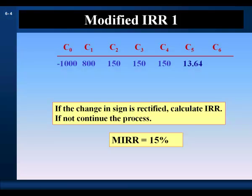The modified IRR of 15% is compared against the cost of capital. Since 15% is greater than the 10% cost of capital, the project is accepted. Note that the opportunity cost of capital is used to modify the cash flow stream, so the cost of capital influences the value of the modified IRR. The modified IRR is therefore not independent of the financial standard it is compared against.